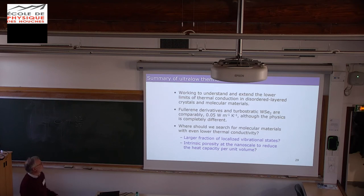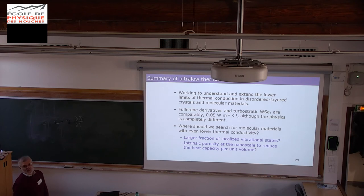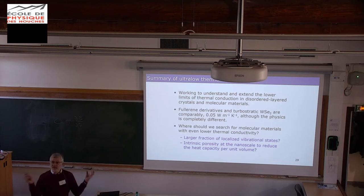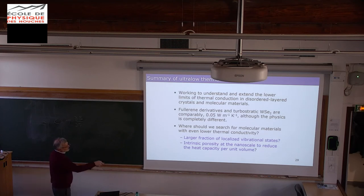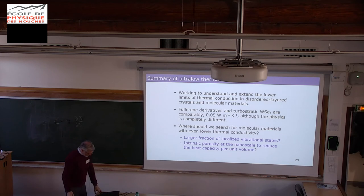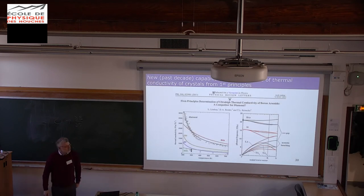To summarize ultra-low thermal conductivity: we're working to extend and lower the limits of thermal conductivity in layered materials and molecular materials. Both turbostratic two-dimensional materials and fullerene derivatives have thermal conductivities about twice that of air — the lowest dense solid values we know of. But the physics is completely different in these two materials, and the question remains: where should we keep looking? Where would we find molecular materials or turbostratic structures with even lower thermal conductivity?